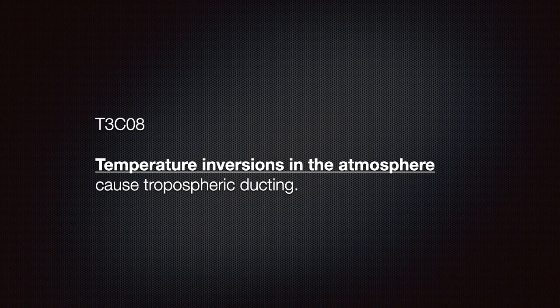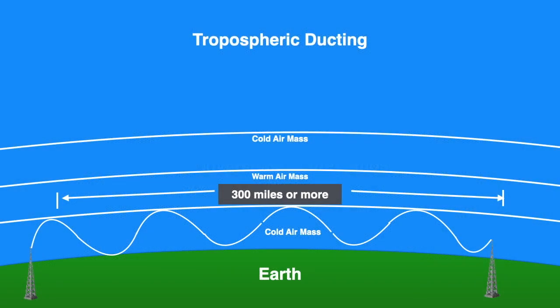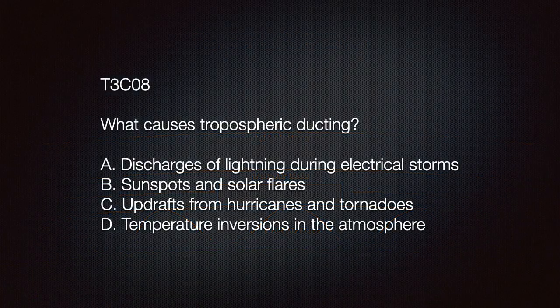Understand that temperature inversions in the atmosphere cause tropospheric ducting. Tropospheric ducting happens when there is a temperature inversion, or thermal inversion, creating a reversal of the normal behavior of temperature in the troposphere. The troposphere is the region of the atmosphere nearest to the Earth's surface. During an inversion, a layer of cold air mass at the surface is under a warm air mass above it.